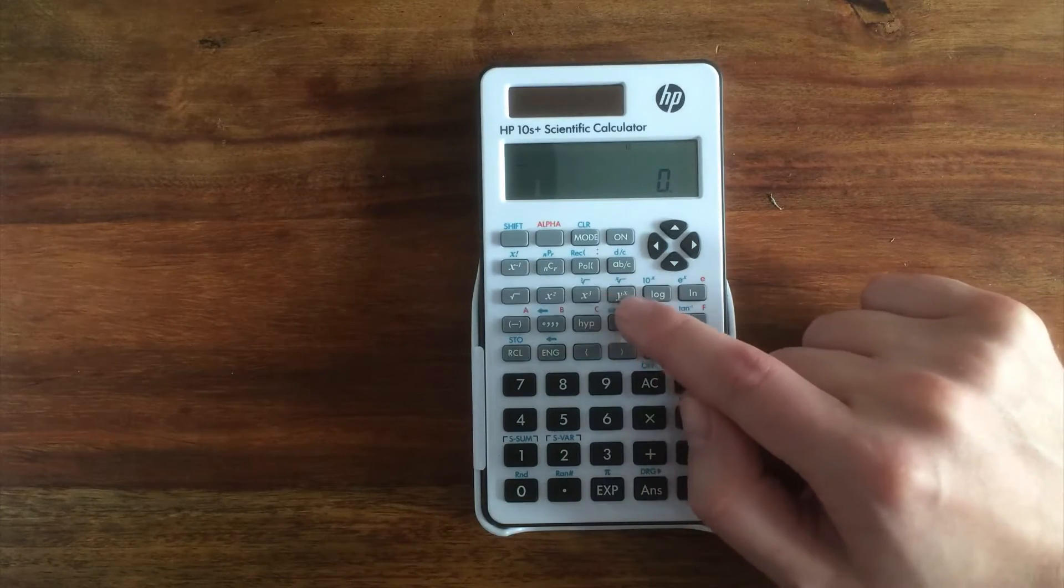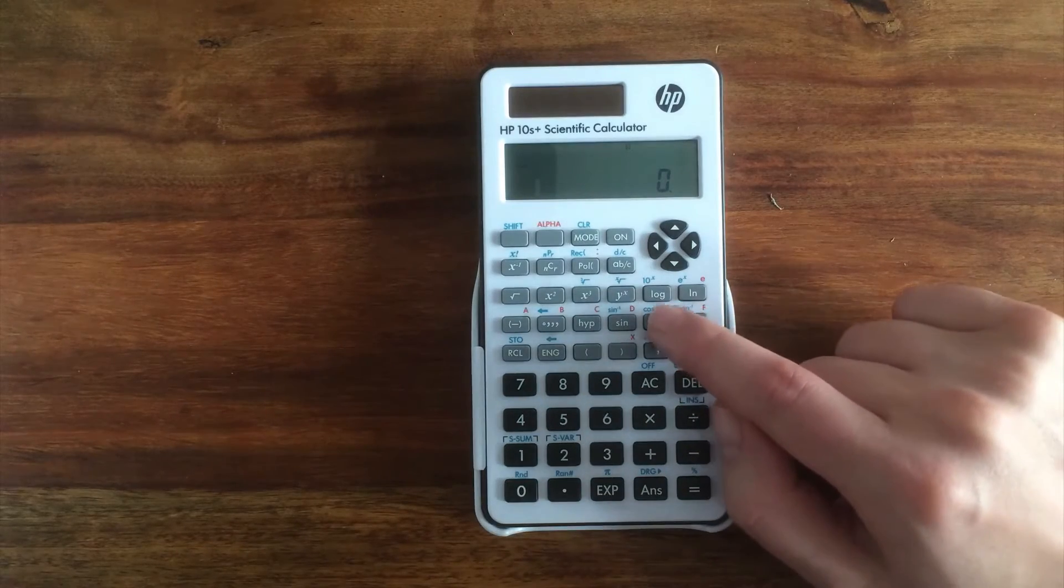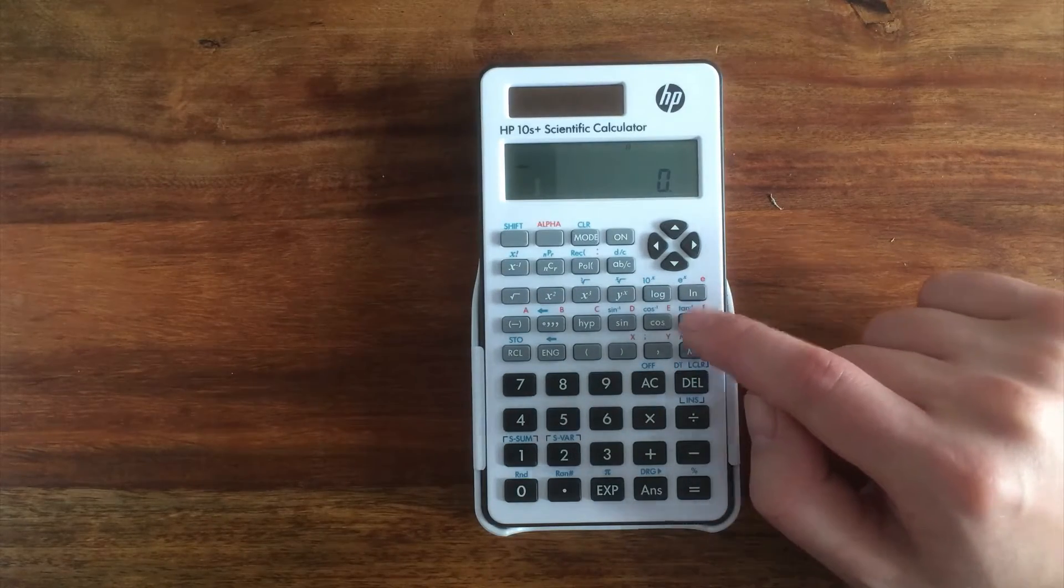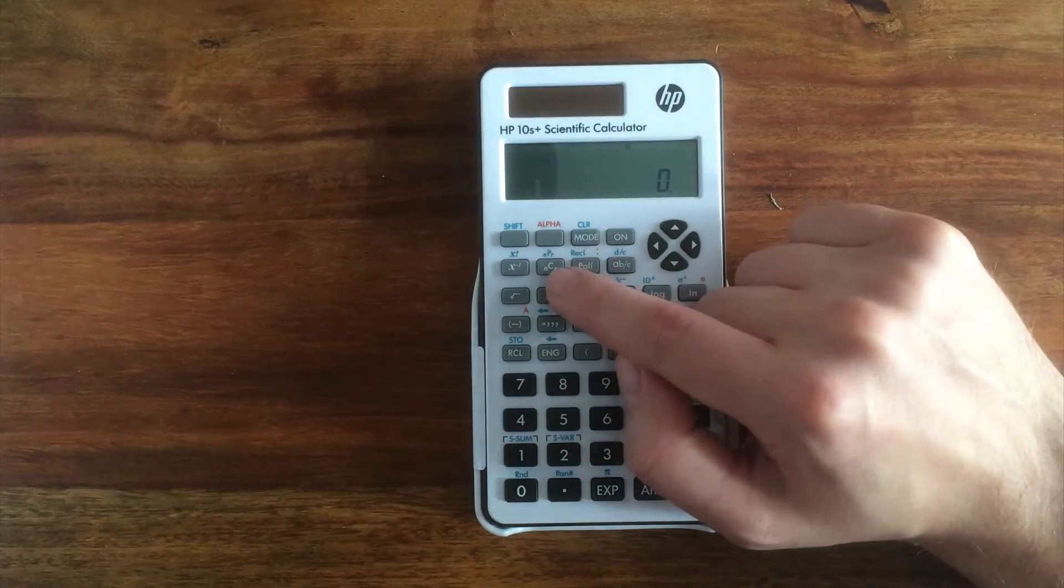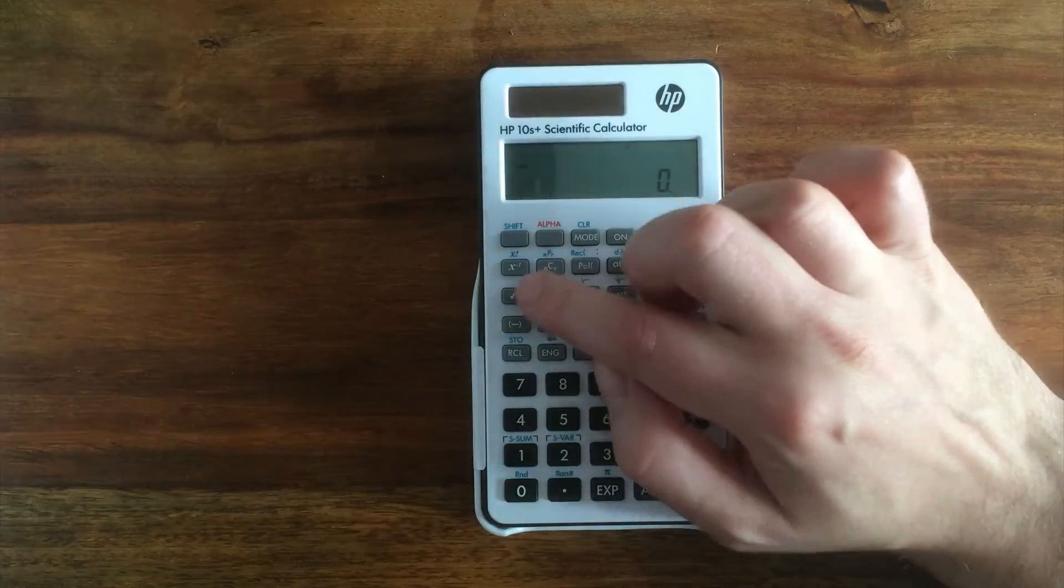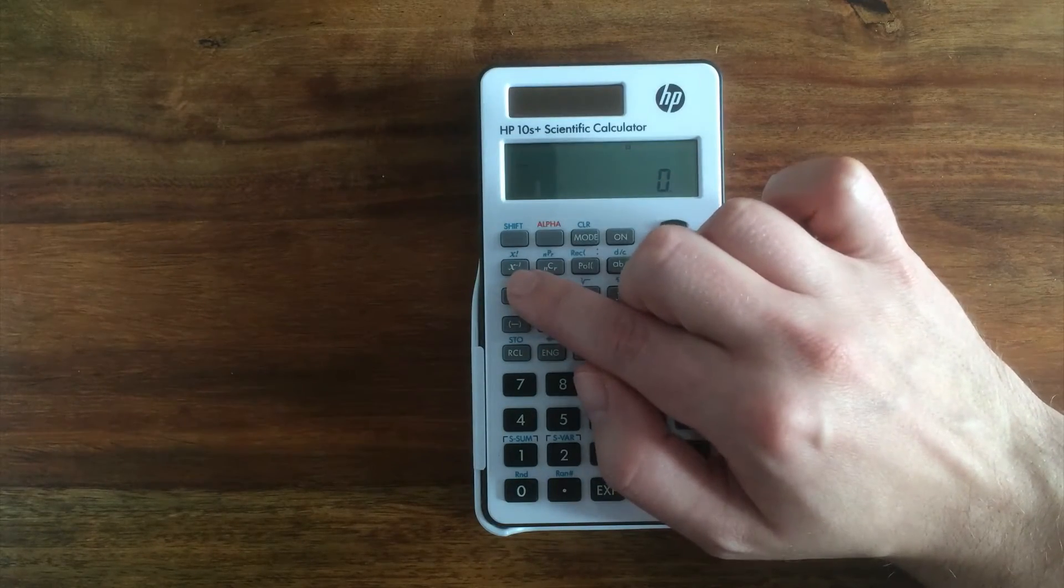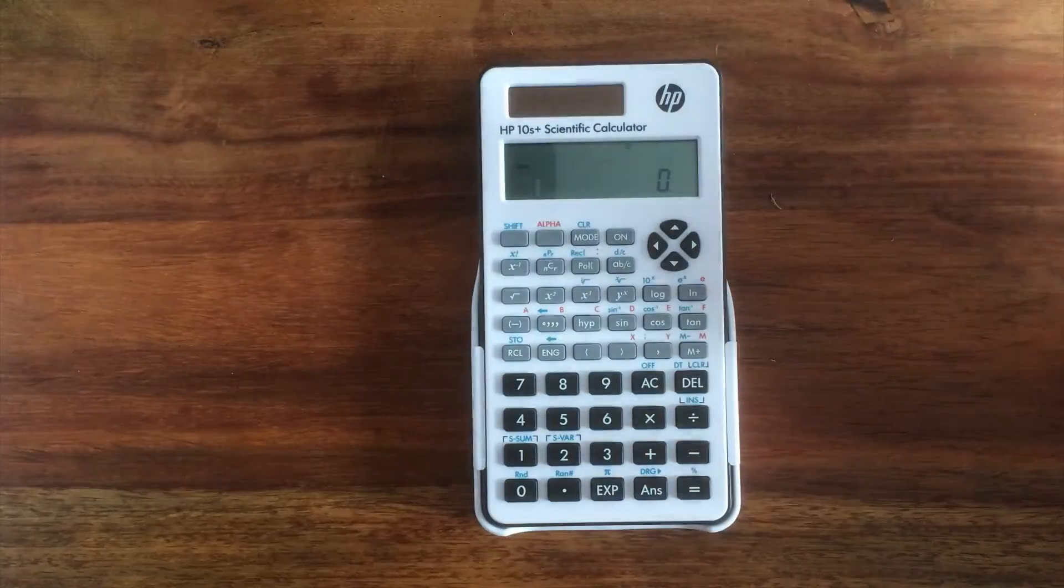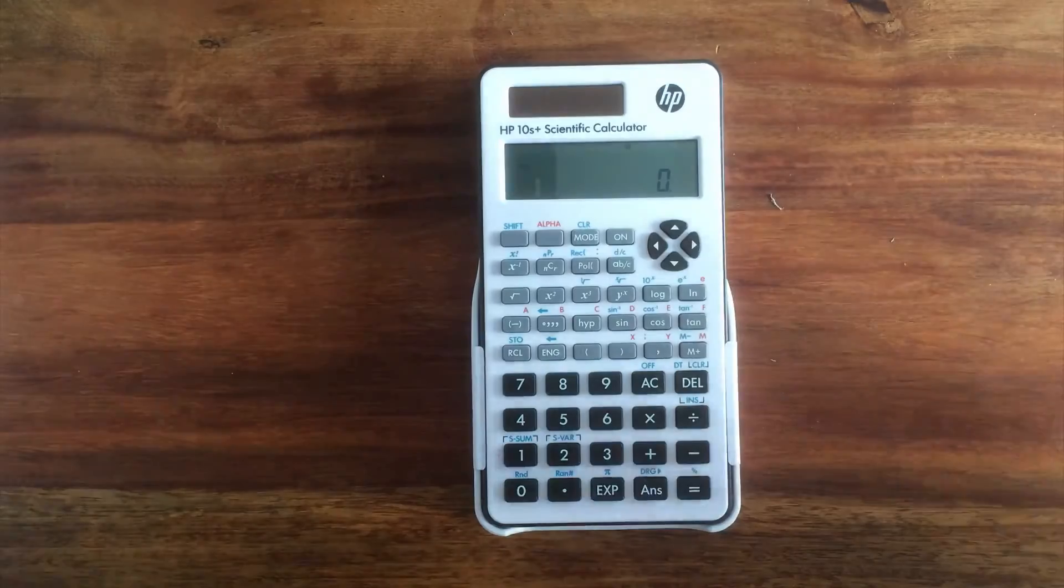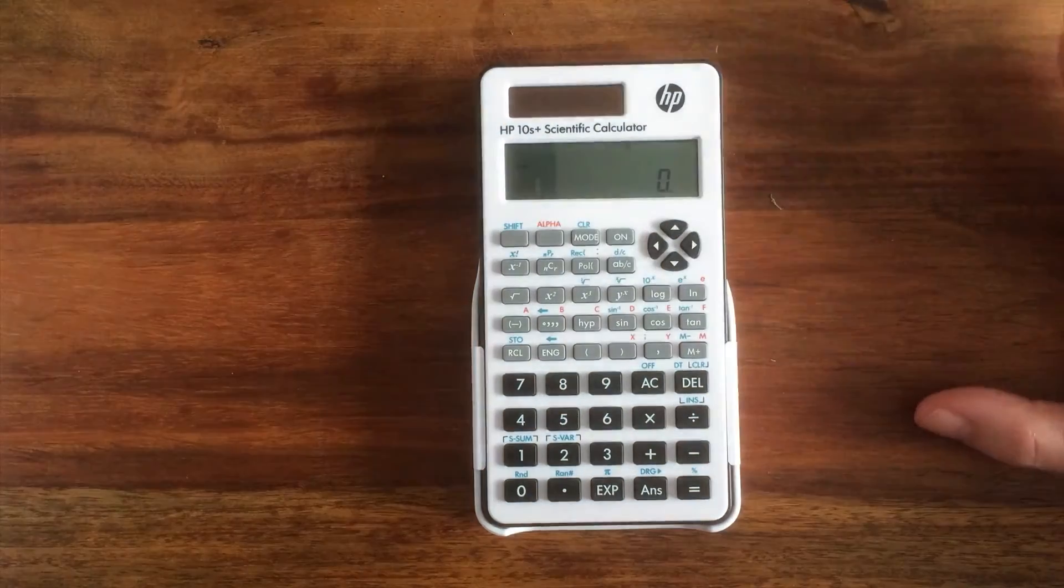We've got a natural logarithm as well, and we've got a fraction button, NCR and NPR. We've got a factorial and also a reciprocal button as well. So it seems to be equipped with everything that you would need on a regular sort of basic scientific calculator. It's got all the functions that are required.